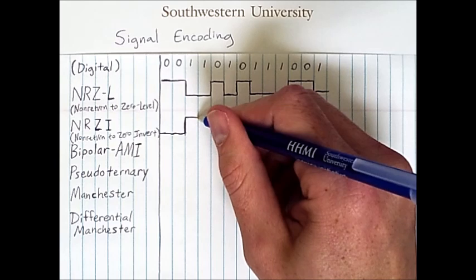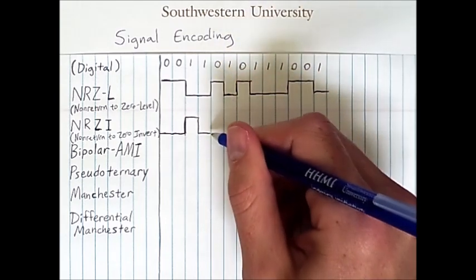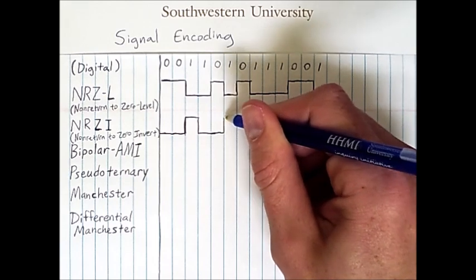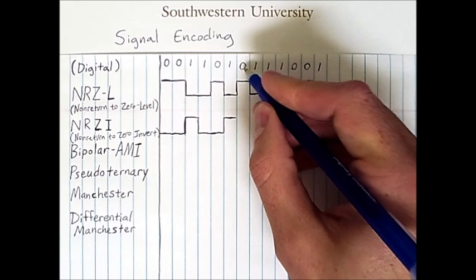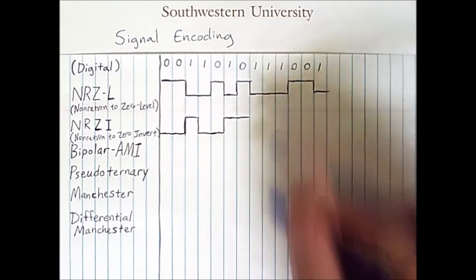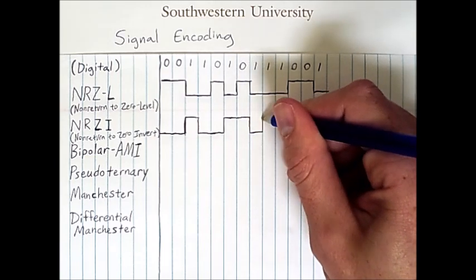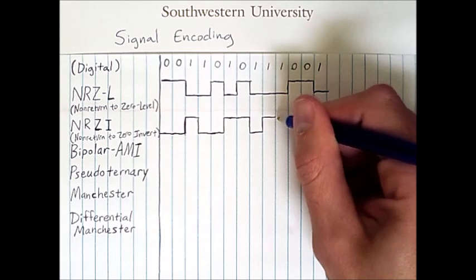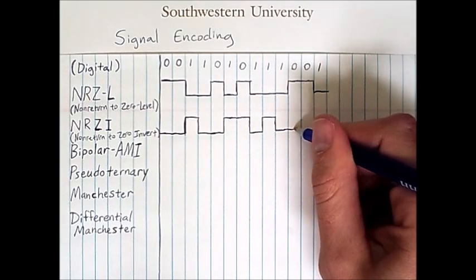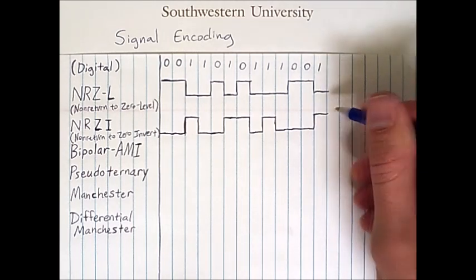Then we have another one, so we change the voltage level again. Next we have a zero, and we do not change the voltage level for a zero. But we have a one next, so we change and go up high. Then we have a zero again, so we stay high. And then we have a sequence of three ones, which means we'll be alternating back and forth — this change encodes a one, this next change encodes a one, and this next change encodes the third one. Then the two zeros do not require a voltage level change, and at the end we have a one, which causes us to jump up.